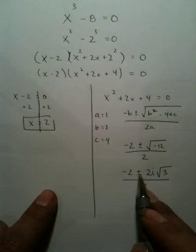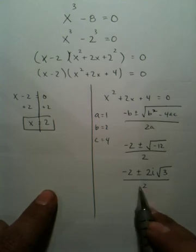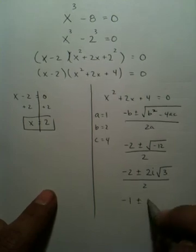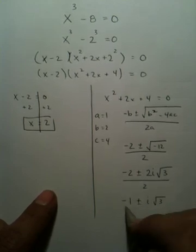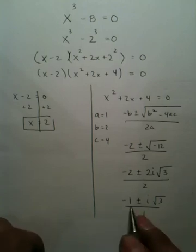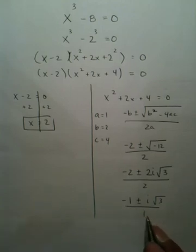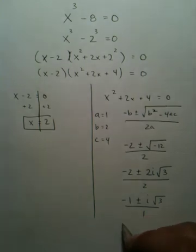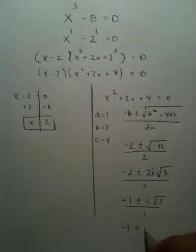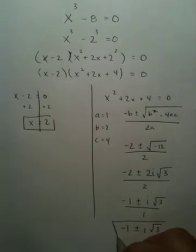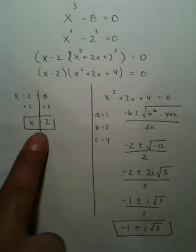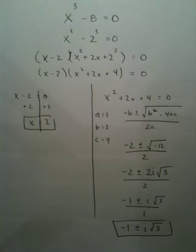Since this is a 2, and this is 2, and this is 2, you can simplify these fractions. This becomes a negative 1. This just becomes i radical 3. The 1 on the very bottom is not necessary, so you wouldn't write it in your final answer. You would just write negative 1 plus or minus i radical 3. There's your second two answers and your third, and you've solved this higher level polynomial.